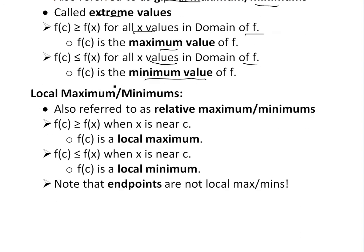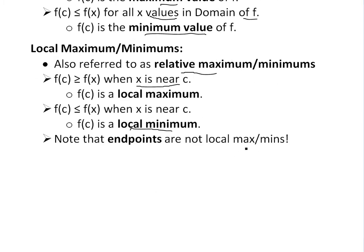When you're dealing with local maximum and minimums, this is basically similar to the above except you're dealing with relative max and minimum — so this is also referred to as relative maximum. The definition is basically f(c) is greater than f(x) when x is near c. So anywhere close to c, if it's locally the max, it's called a local max. Similarly, if f(c) is less than or equal to f(x) when x is near c, then f(c) is a local minimum. Also, one final note is that endpoints are not considered local max or min.